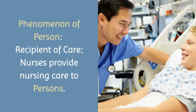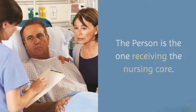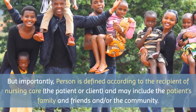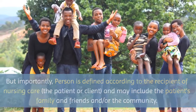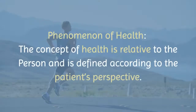The phenomenon of person: nurses provide nursing care to persons — the one receiving the nursing care. The level and type of care will vary with the acuity of the patient or the needs of the client. What's important is that person is defined according to the recipient of nursing care and may include the patient's family, friends, and community. The nurse needs to consider how the patient is defining family when planning care, because this will impact the type of support, resources needed, visiting hours, etc.